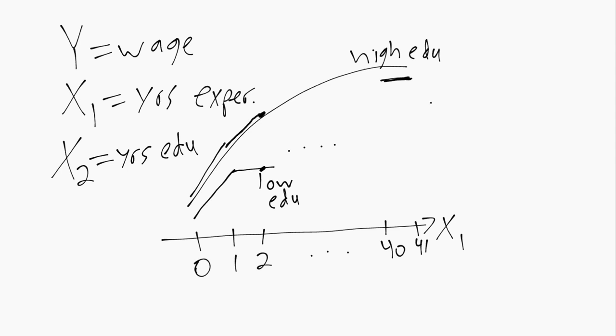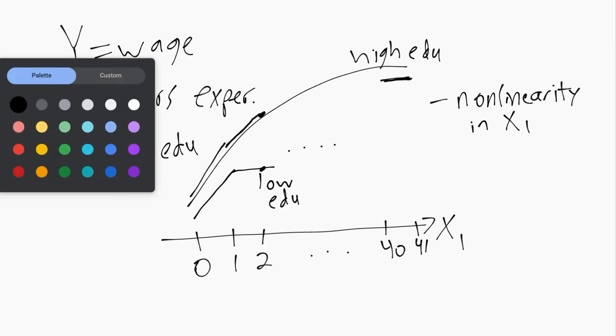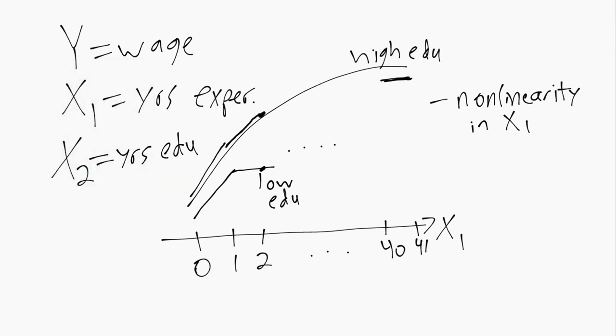In this example, we have both non-linearity in X1 by itself. That's this changing slope or curved shape that gives us non-linearity in X1.